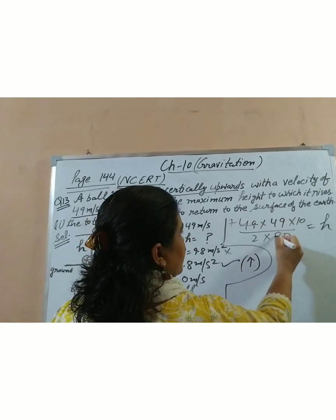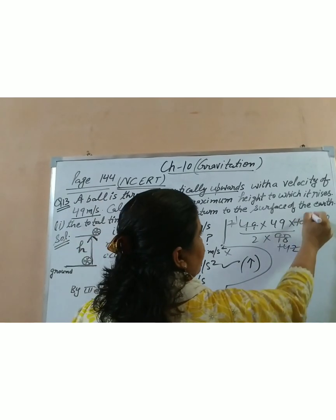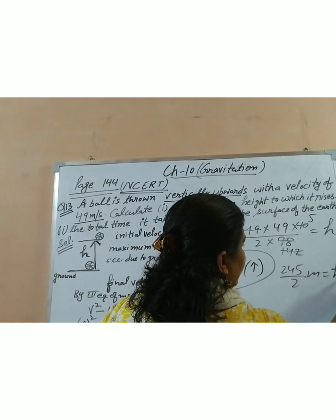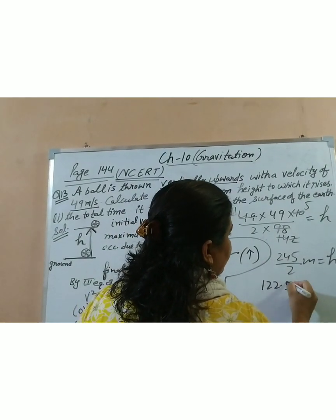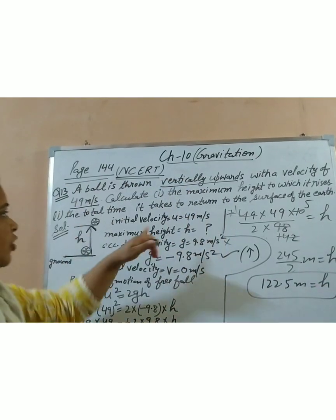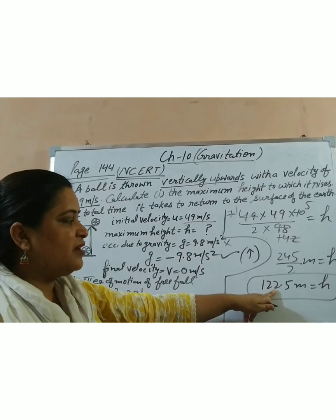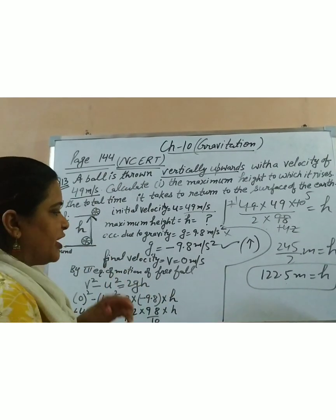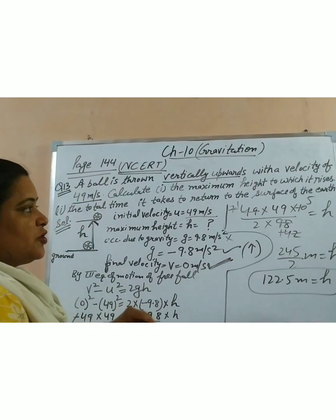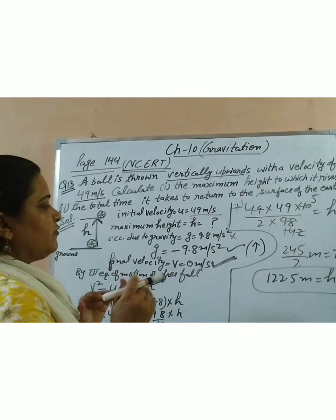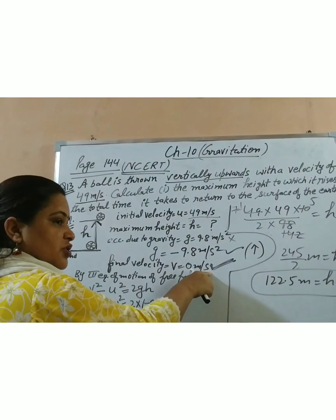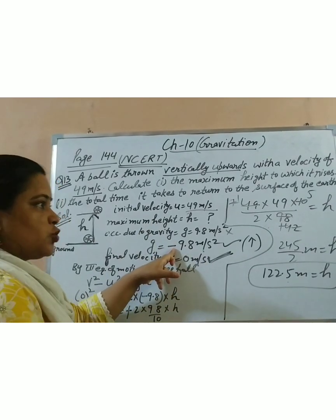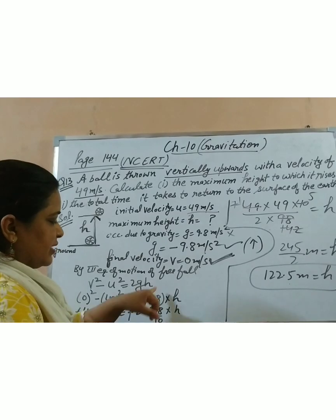Solving the arithmetic: 49 × 49 = 2401, divided by (2 × 98 = 196), which gives H = 122.5 meters. So when you throw the ball with an initial speed of 49 m/s, the maximum height it attains is 122.5 meters. The key hint here is that final velocity equals 0 at the highest point — this is not given in the question, you have to think of it yourself. We take g as minus 9.8 because it is a retardation case.